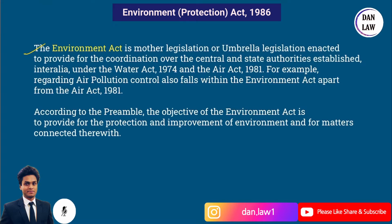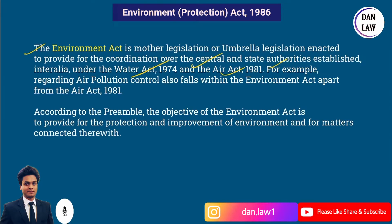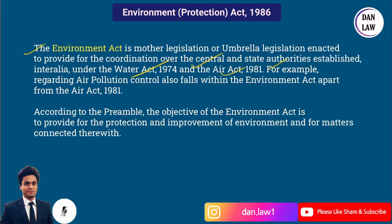The Environment Protection Act is mother legislation or umbrella legislation enacted to provide for the coordination over the central and state authorities established, inter alia, under the Water Act 1974 and the Air Act 1981. For example, regarding air pollution control, this also falls within the Environmental Act. We have already discussed the Water Act and Air Act — links are in the description below.